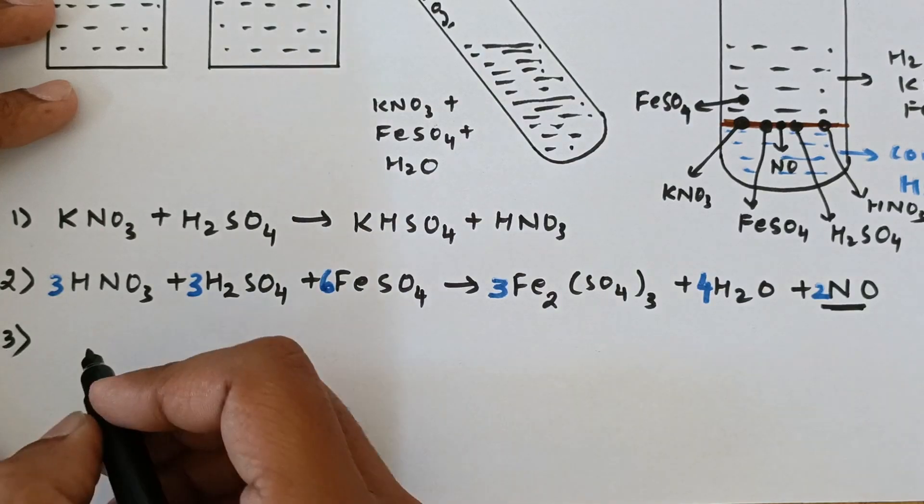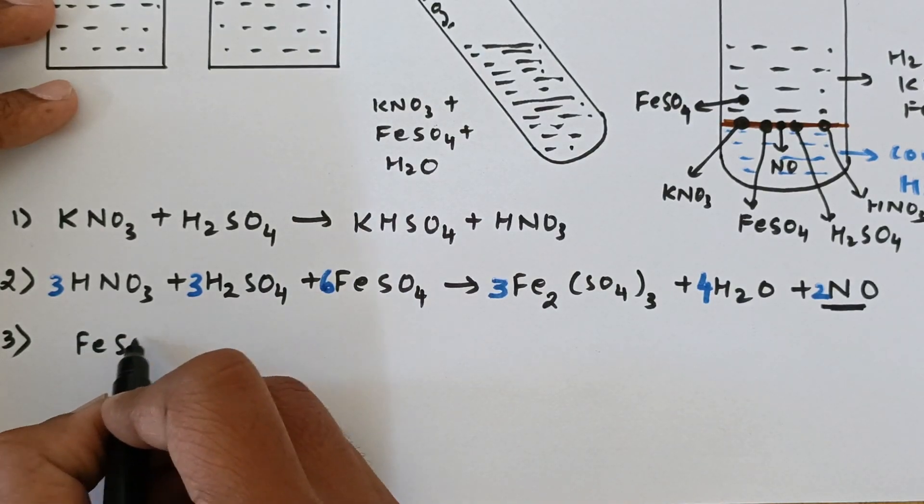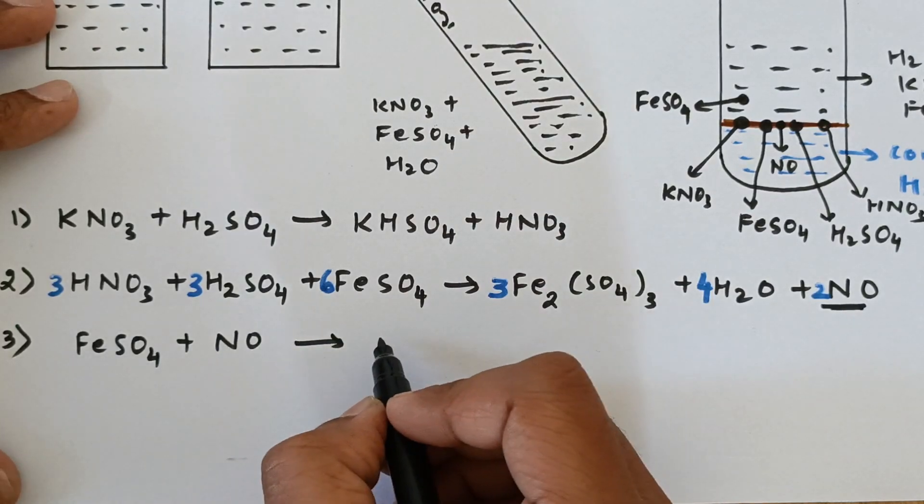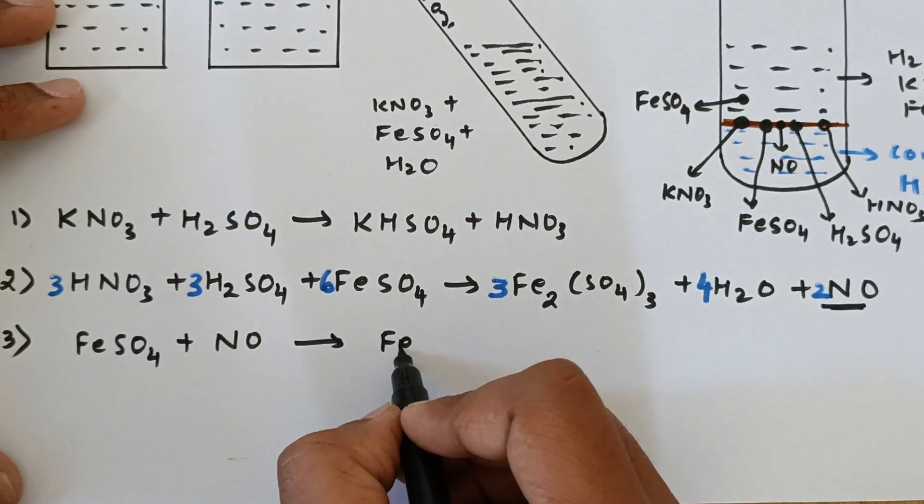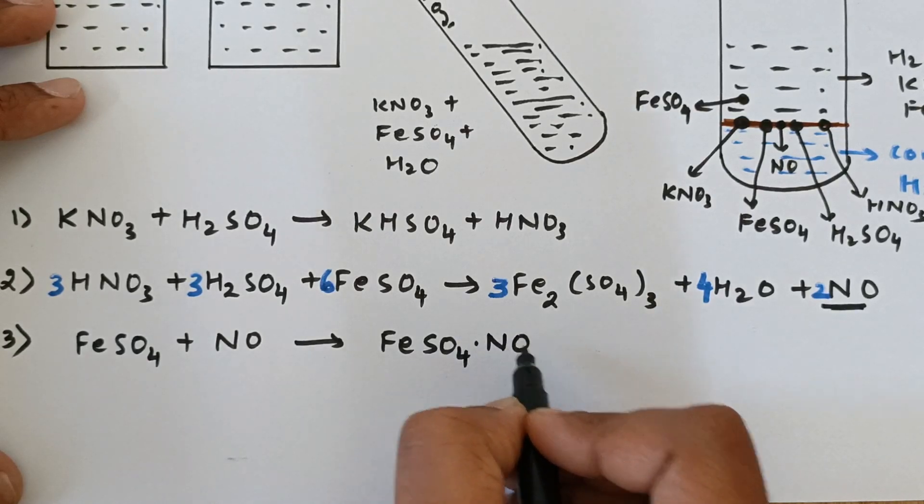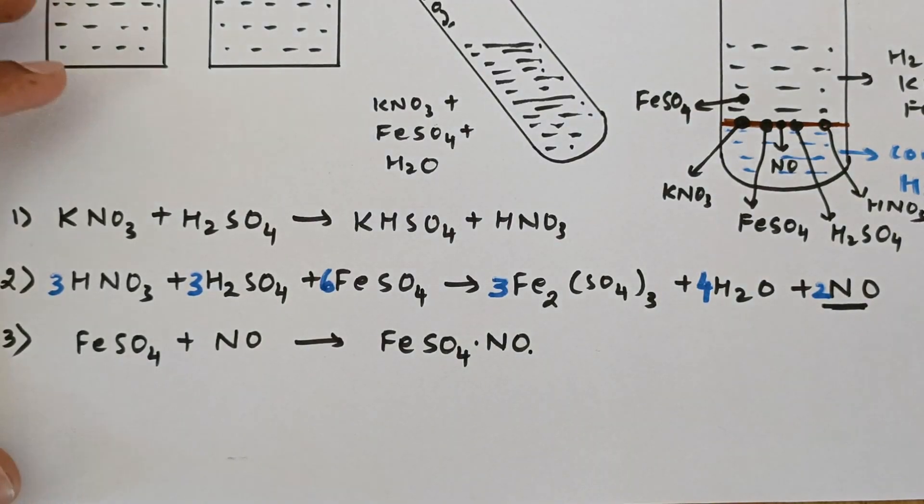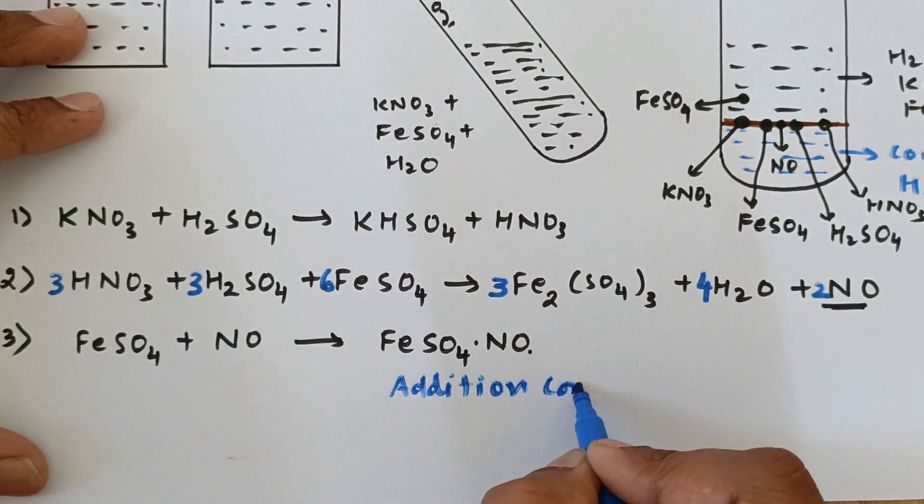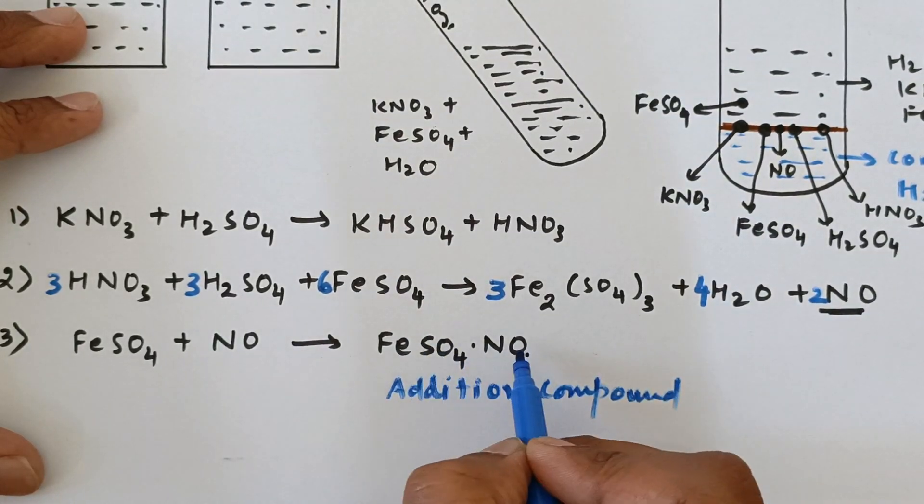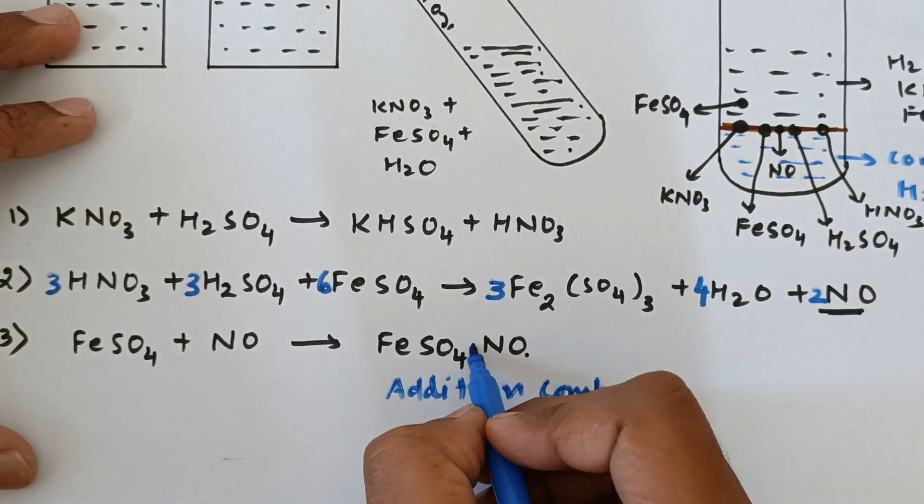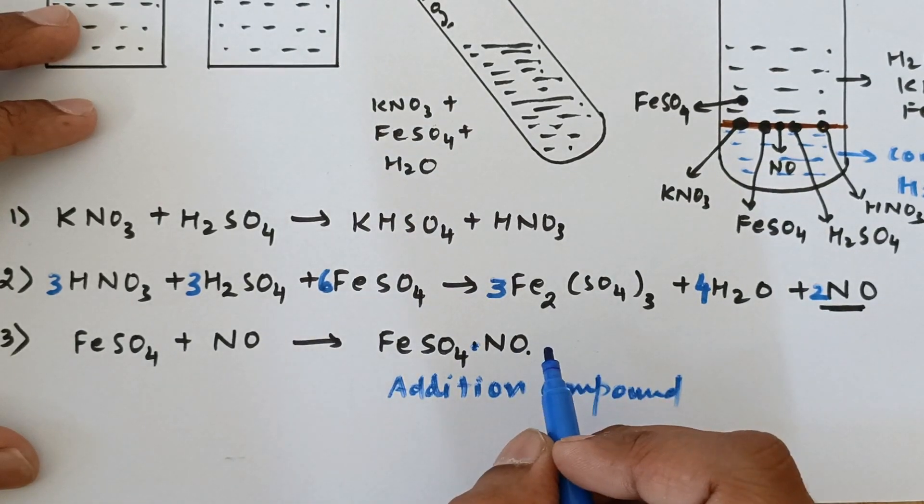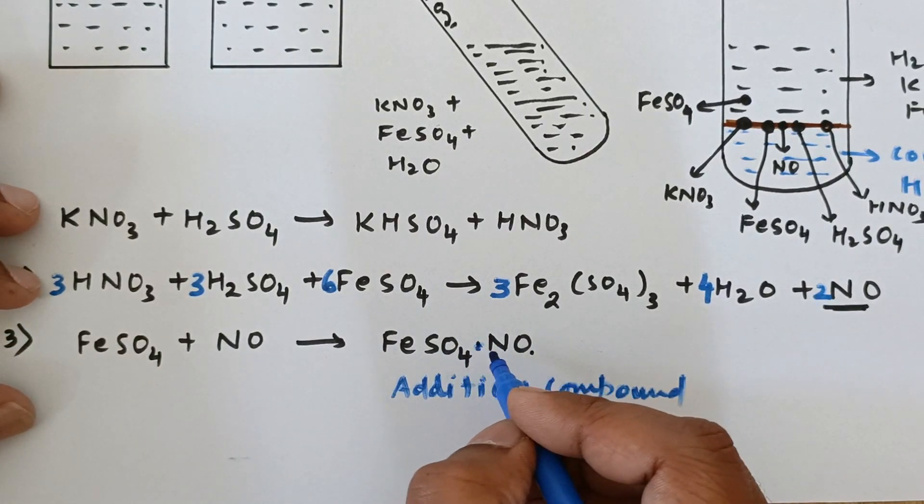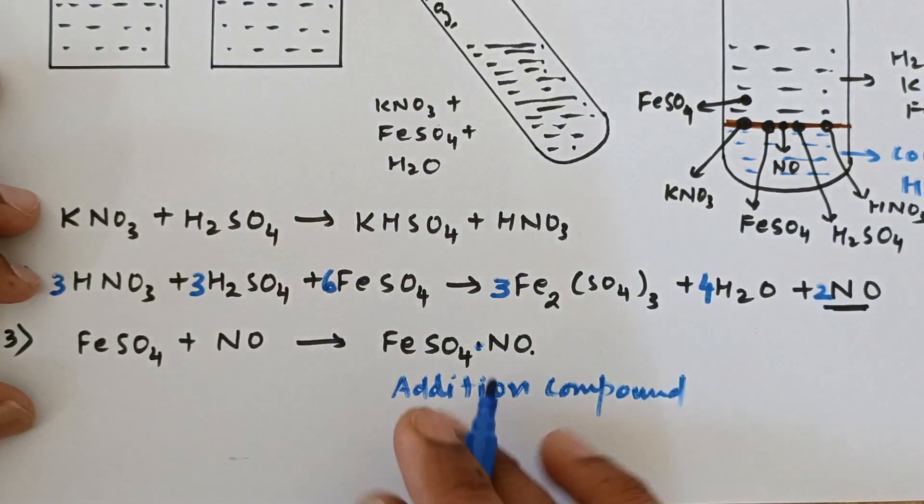So let me write down the third reaction, that is FeSO4 plus NO. Now this yields an addition compound, FeSO4·NO. Now this is an addition compound, and now these two are actually connected with Van der Waals force of attraction. There is no chemical bonding as such. We can just say a very small force of attraction between these two in the form of Van der Waals forces.